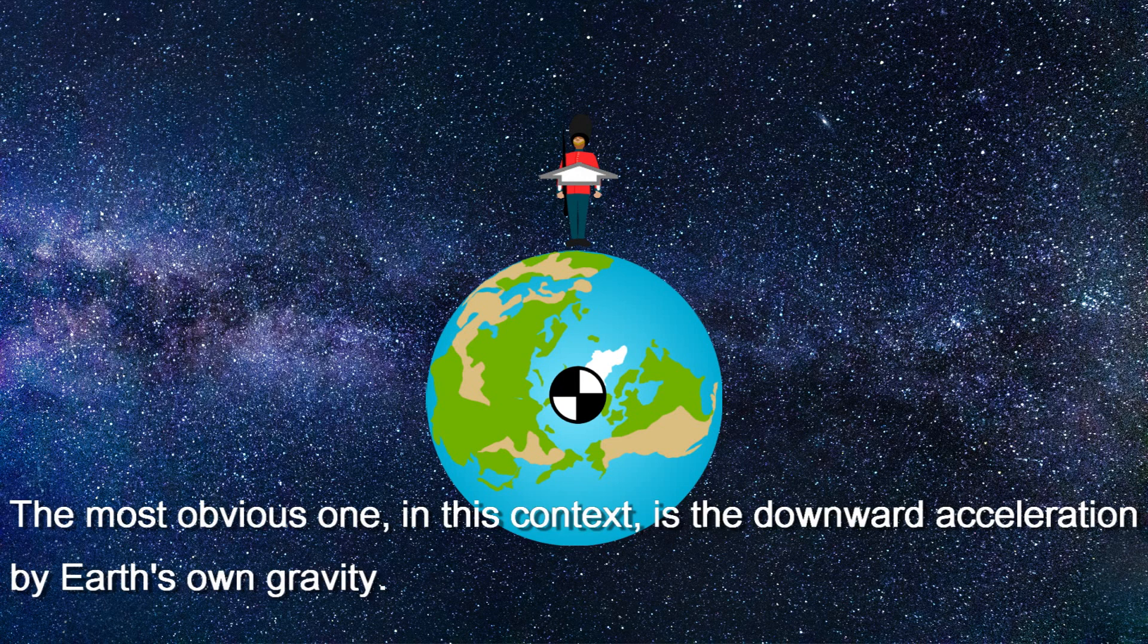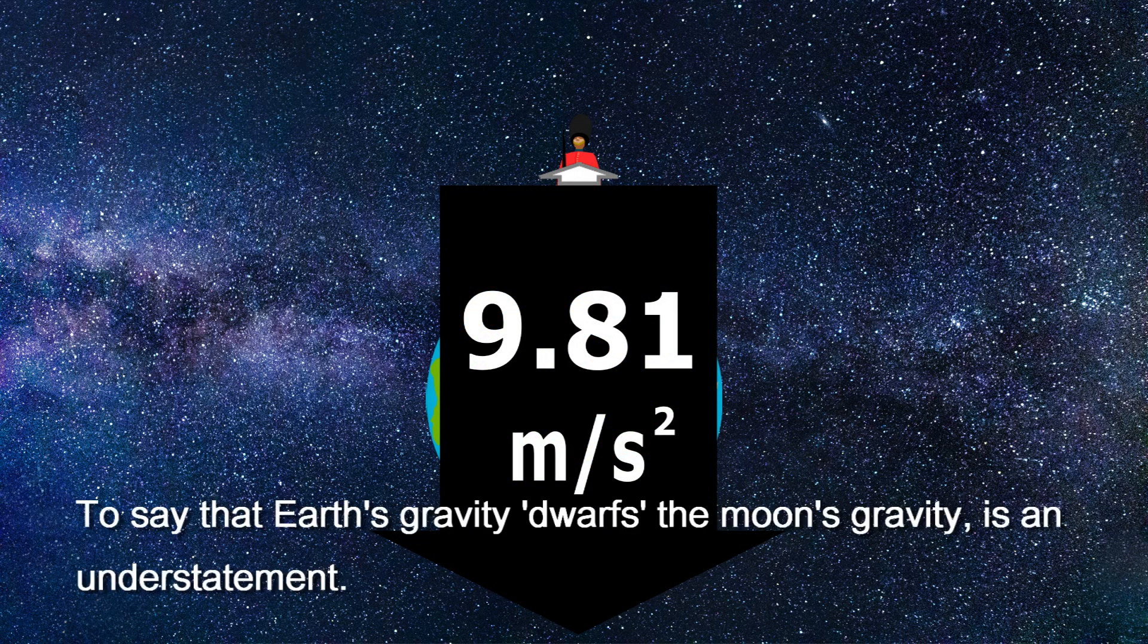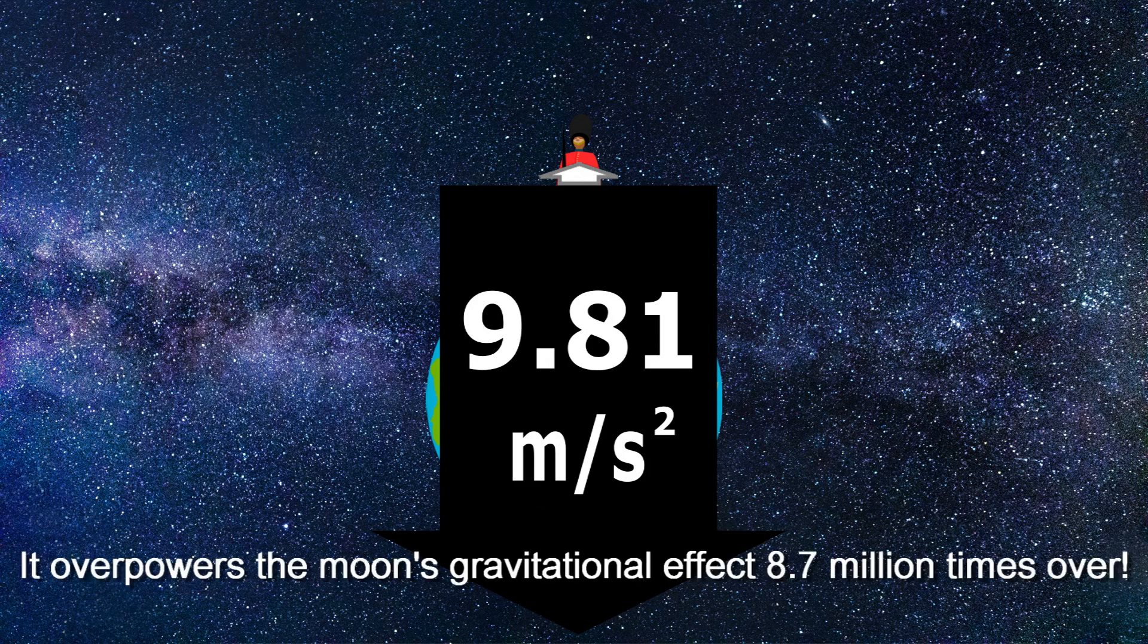The most obvious one in this context is the downward acceleration by Earth's own gravity. To say that Earth's gravity dwarfs the Moon's gravitational attraction is an understatement. It overpowers the Moon's gravitational effect 8.7 million times over.